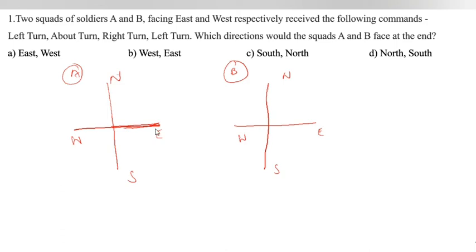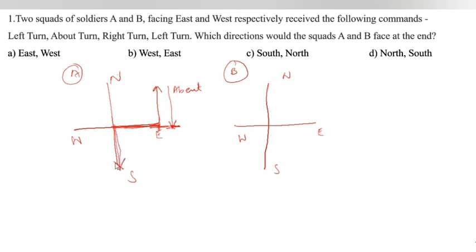First we finish squad A, who is facing East. The commands are: left turn — we go this side. About turn means reverse. After that, right turn — you have to stand here; this is the left side, this is the right side, so right turn goes this side. Then left turn comes this side. So the arrow mark ends up this side. This is squad A's final direction.